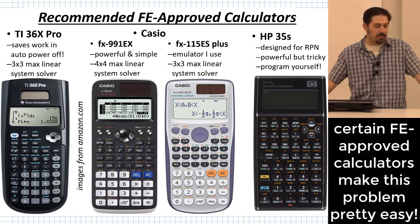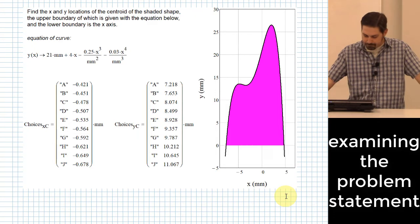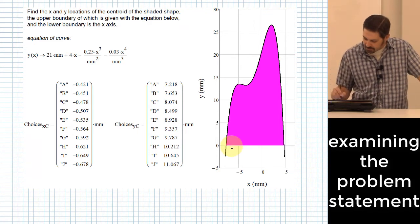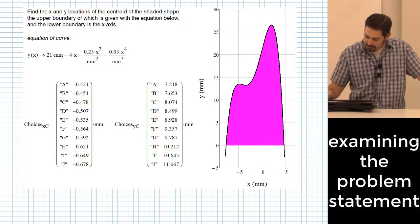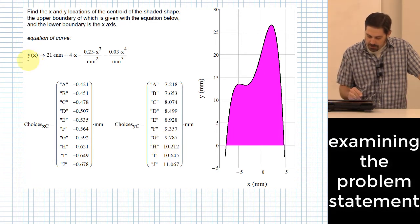I'll give you a demonstration with this example problem. It says: find the X and Y locations of the centroid of the shaded shape, the upper boundary of which is given with the equation below, and the lower boundary is the X-axis. We're given choices for both the X centroid and the Y centroid.